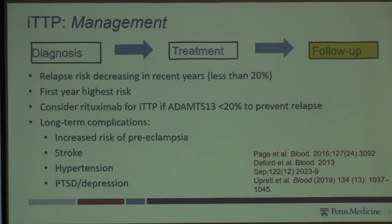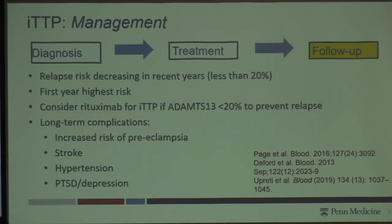As for follow-up, people used to think of TTP as a one-and-done event — it's not. Patients can unfortunately have relapses. We now consider preemptive treatment for patients who don't yet have a TTP relapse but have low ADAMTS13 levels. We also know that even outside of TTP episodes, patients with a prior episode face long-term complications such as increased risk of preeclampsia in pregnancy, strokes, and hypertension. Because this is such a traumatic event — often a completely unknown diagnosis when they arrive — there's a high incidence of post-traumatic stress and depression.